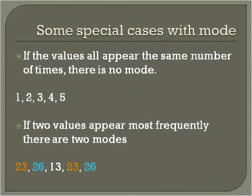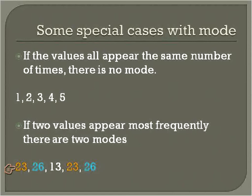Here are some special cases with mode. The first special case: if all the values appear the same number of times, there is no mode. For example, in the list 1, 2, 3, 4, 5 — each number is listed just one time, so there is no mode, because no number appears the most. The second special case: if two values appear the same number of times — the most frequently — such as 23 appearing twice and 26 appearing twice, then you actually have two modes. So both 23 and 26 are the solution for the mode of that list.